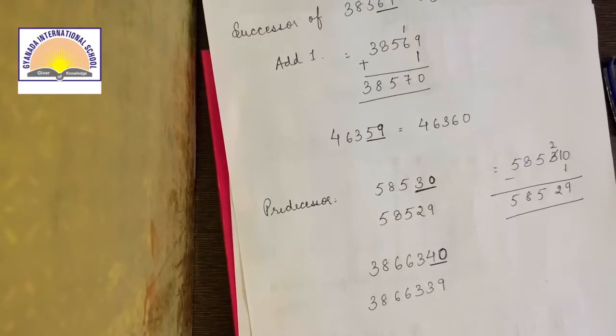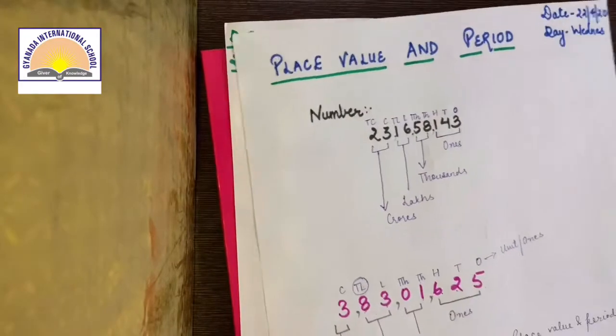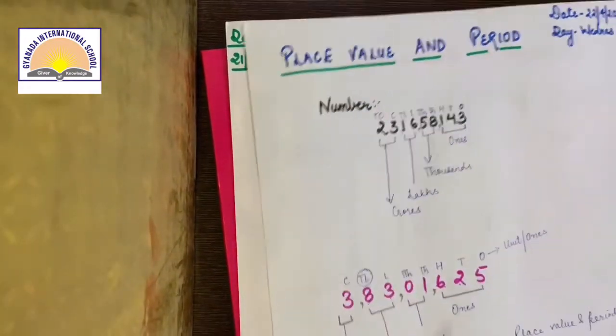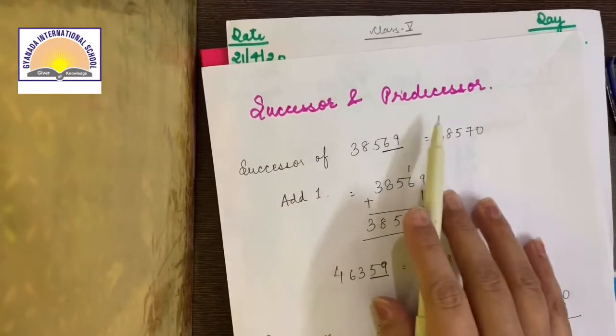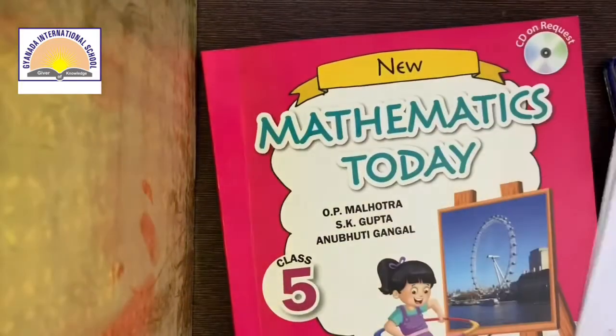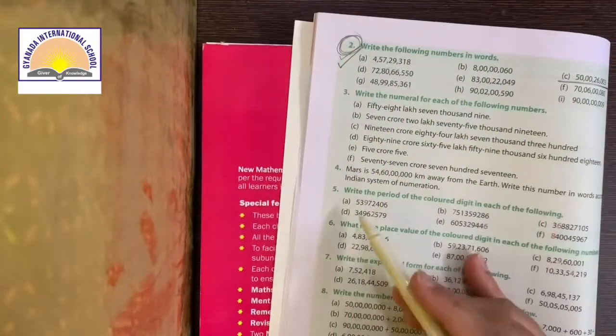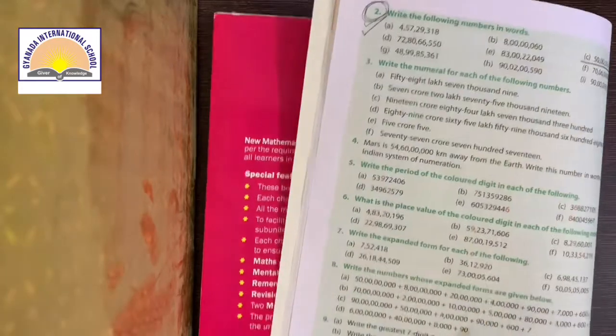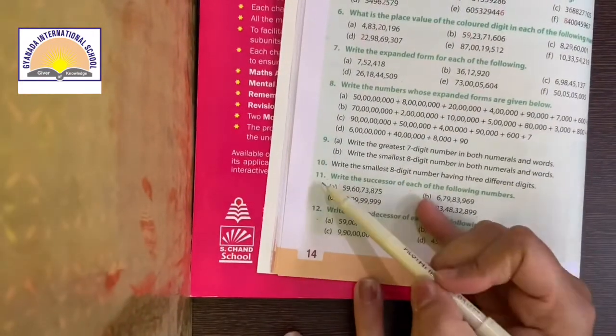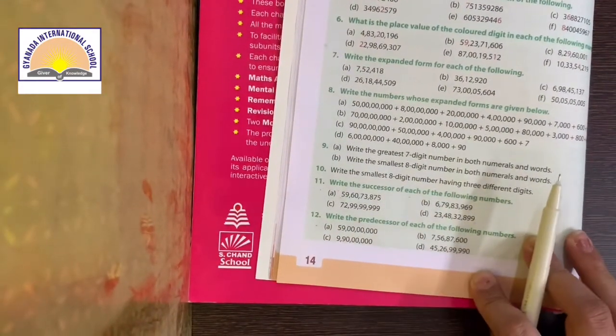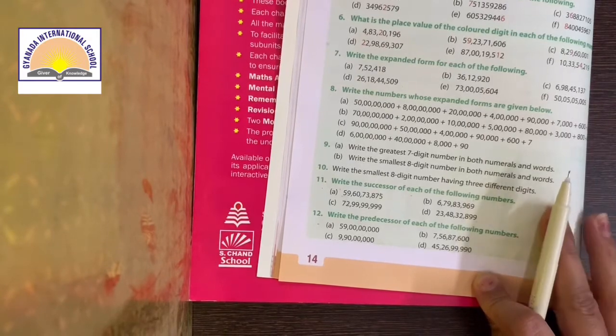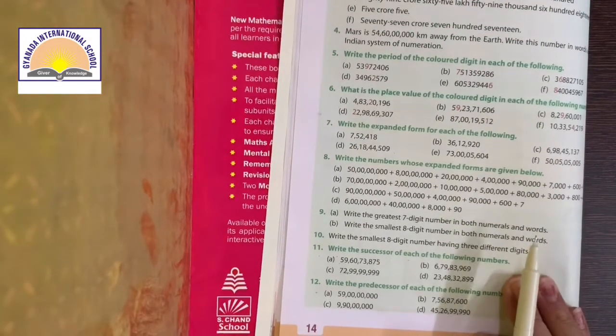Alright class? So we have learnt place value and period and successor and predecessor today. And I will give you some homework like question number five, question number six, question number eleven, and question number twelve. And you all have to do it and send it to me positively.